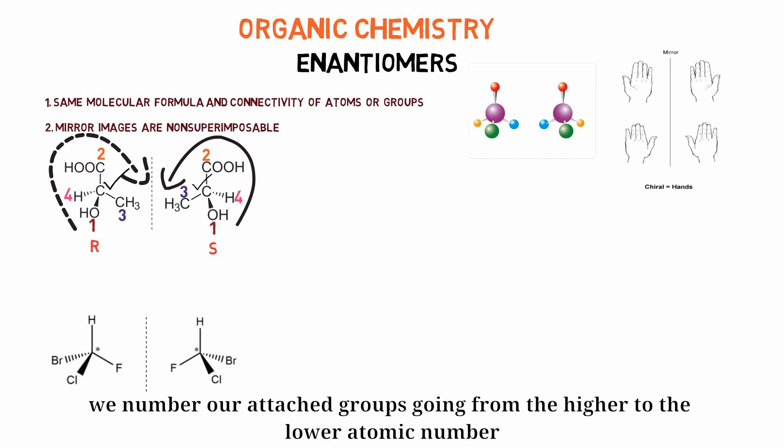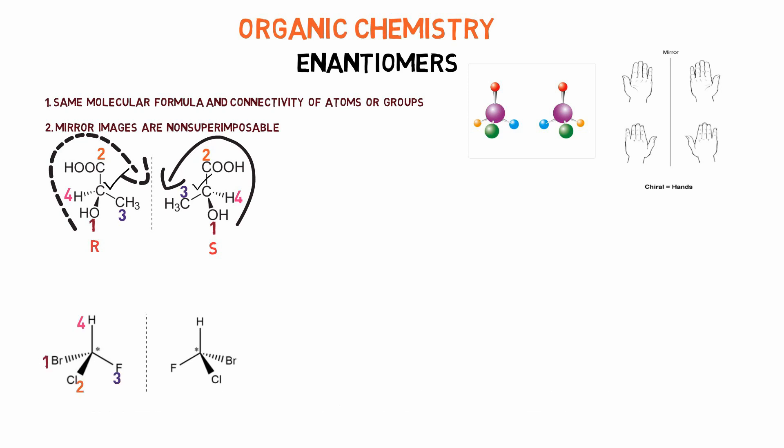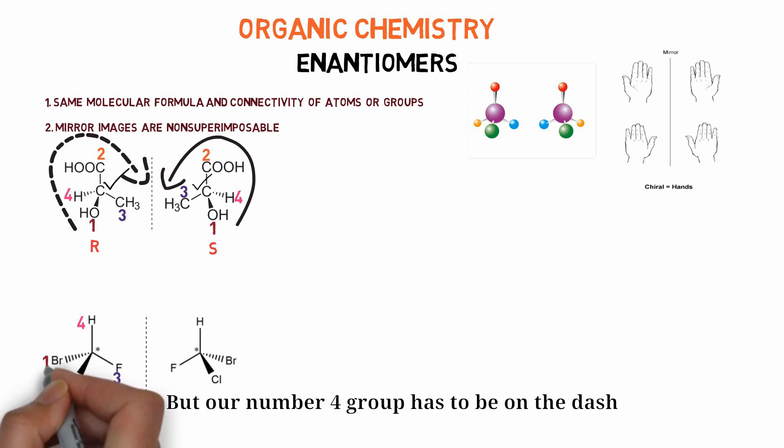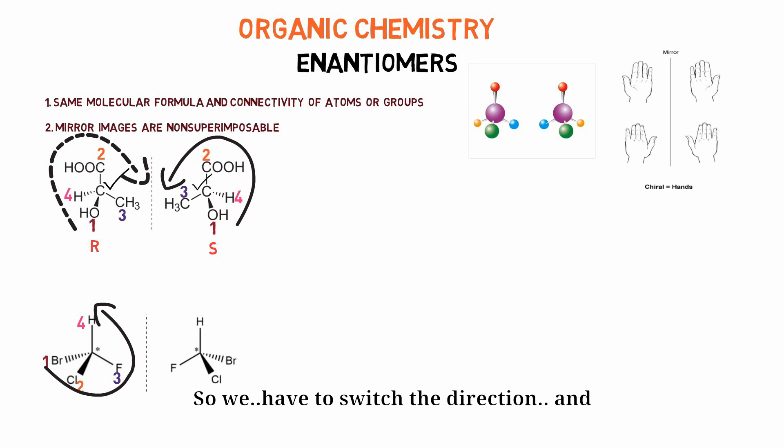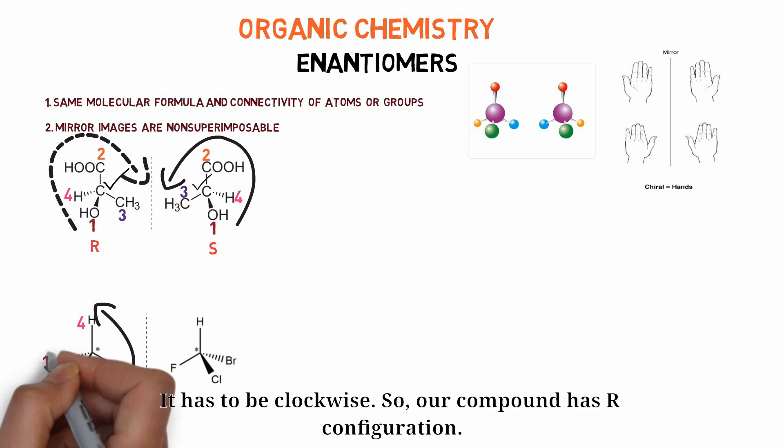We number our attached groups going from the higher to the lower atomic number. The direction if we go from one to four seems anti-clockwise, but our number four group has to be on the dash. So we have to switch the direction and it has to be clockwise. So our compound has R configuration.